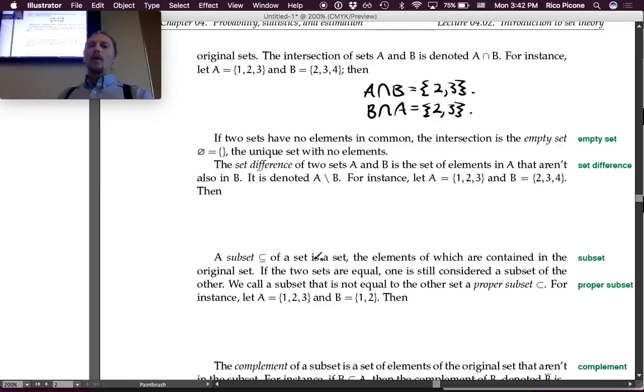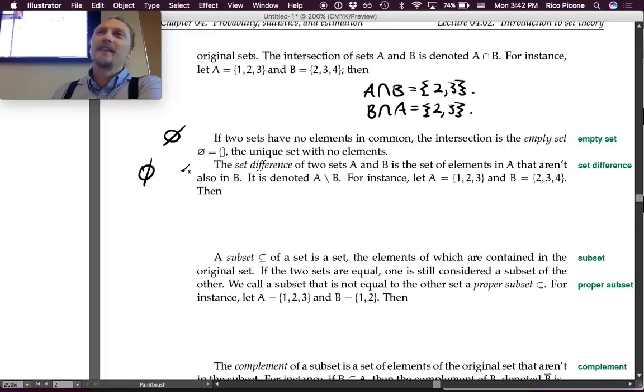If two sets have no elements in common, the intersection is the empty set, which is denoted with this circle with a line through the middle, which is not phi, which is subtly different. Hopefully from context you'll be able to tell the difference. It's the unique set with no elements.